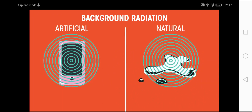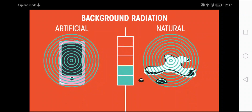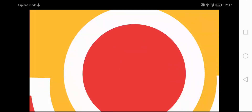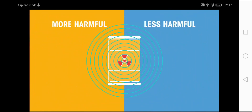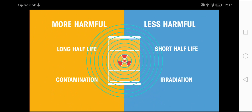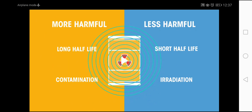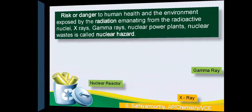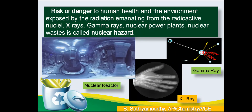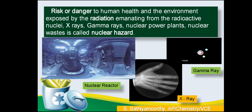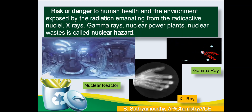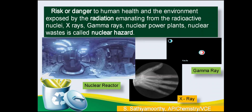The radiation produced may be natural or artificial. The radioactive wastes generated have a half-life of several thousand years, so we must be careful. If they are having a long half-life, they will be more harmful — that is called contamination. If they are having a very short half-life, they are less harmful, and that process is called irradiation. Nuclear hazard is nothing but exposure to severe radiations like radioactive nuclides, x-rays, gamma rays, nuclear power plants and nuclear waste, causing severe danger or risk to human health and environment.